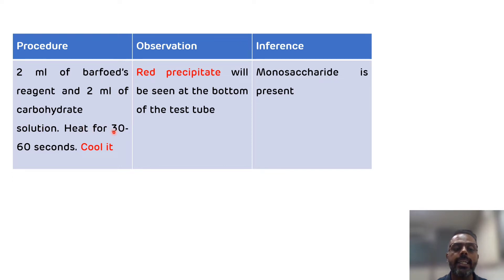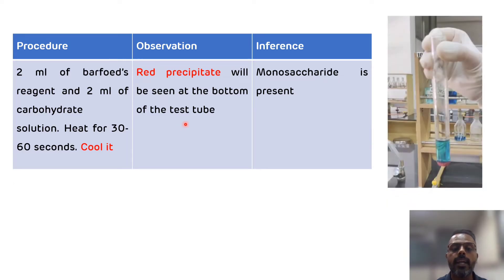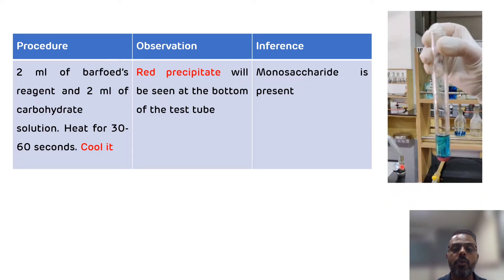After mixing, heat for 30 to 60 seconds, then cool it. After cooling down, if there is a presence of red precipitate at the bottom of the test tube, that means monosaccharide is present and Barford's test is positive. This is how the red precipitate will look like. That is all about Barford's test.